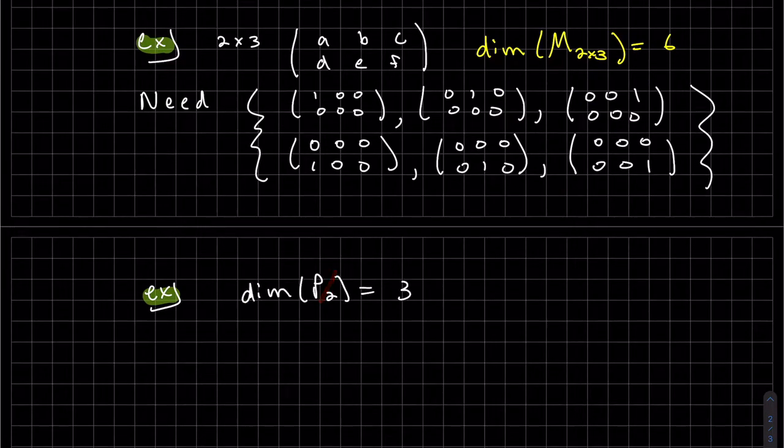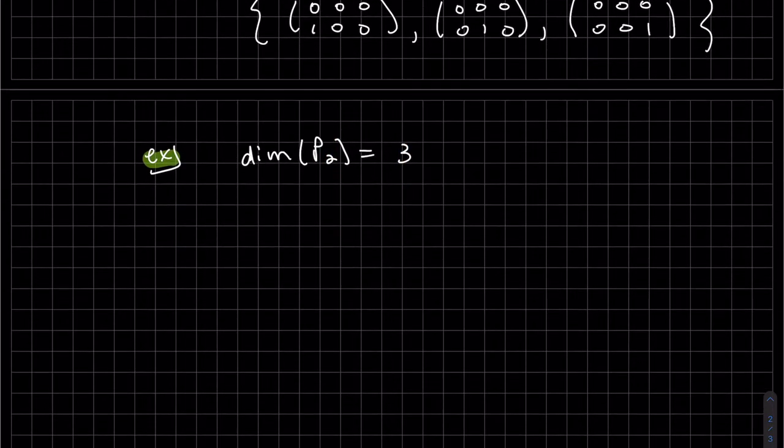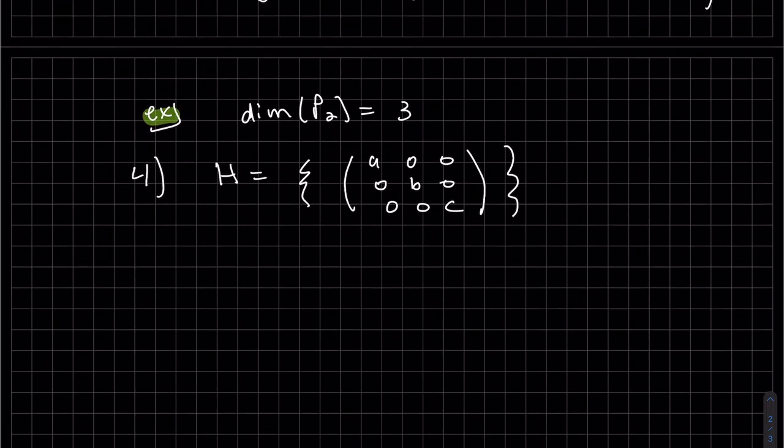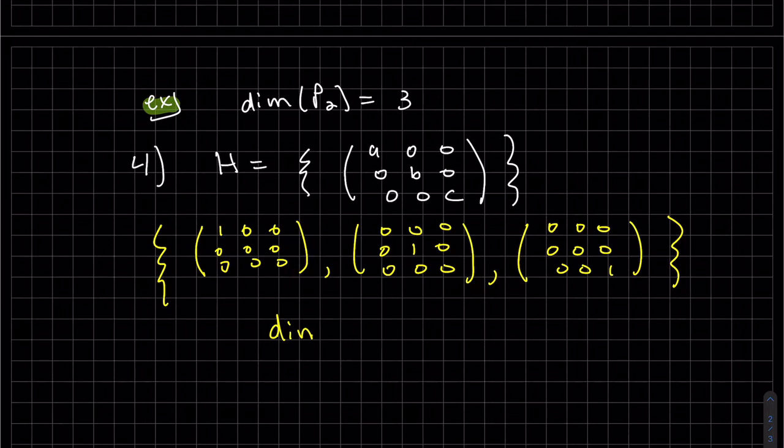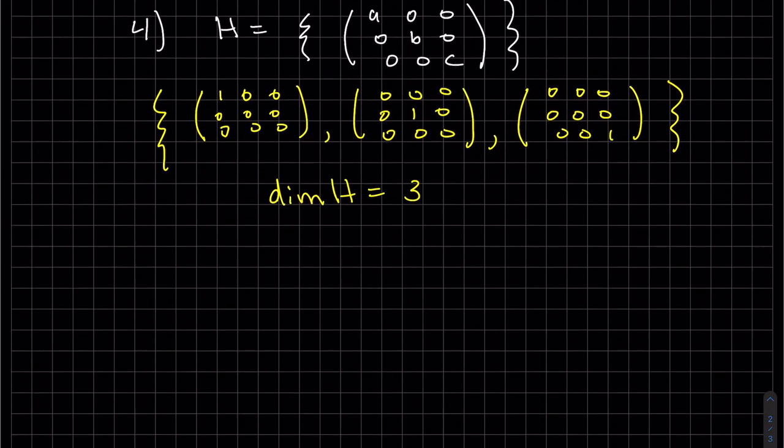The second degree polynomial has a dimension of 3. If we have an h as a subset of m 3 by 3, what's our basis going to look like? It looks like our dim of h is going to be 3.